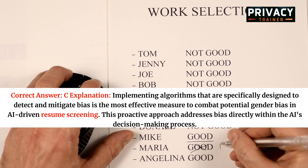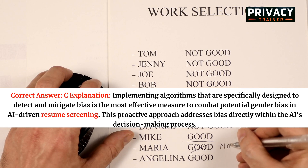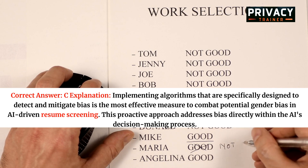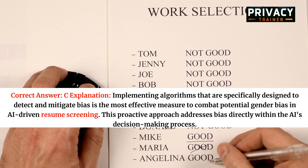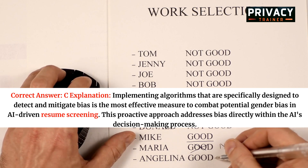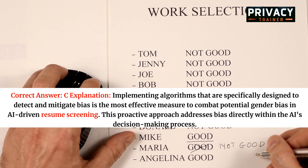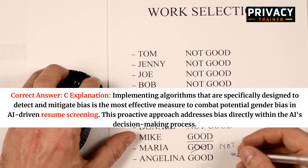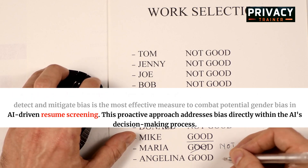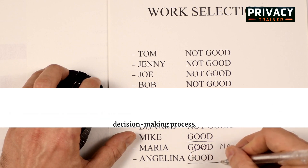Correct answer: C. Implementing algorithms that are specifically designed to detect and mitigate bias is the most effective measure to combat potential gender bias in AI-driven resume screening. This proactive approach addresses bias directly within the AI's decision-making process.